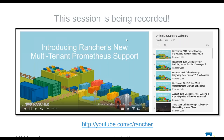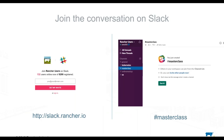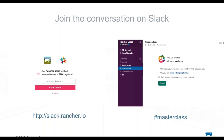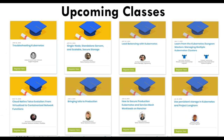Many of you are probably already part of the Slack channel at slack.rancher.io — totally free, thousands of members, hundreds of people posting every day. There's also a channel just for these sessions: pound masterclass. We do these once a week or once every two weeks. If you go to rancher.com/kubernetes-masterclass, you'll find all the recordings and upcoming classes.